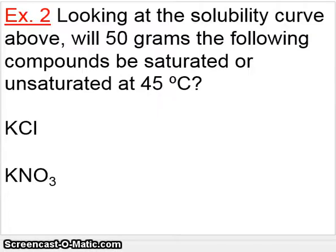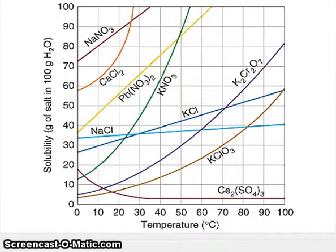And the question is this. Looking at the solubility curve above, will 50 grams of the following compounds be saturated or unsaturated at 45 degrees Celsius. So we're going to look at 45 degrees Celsius, 50 grams for both KCl and KNO3. So what we have is we're operating at 45 degrees Celsius, which is right here, at this point.